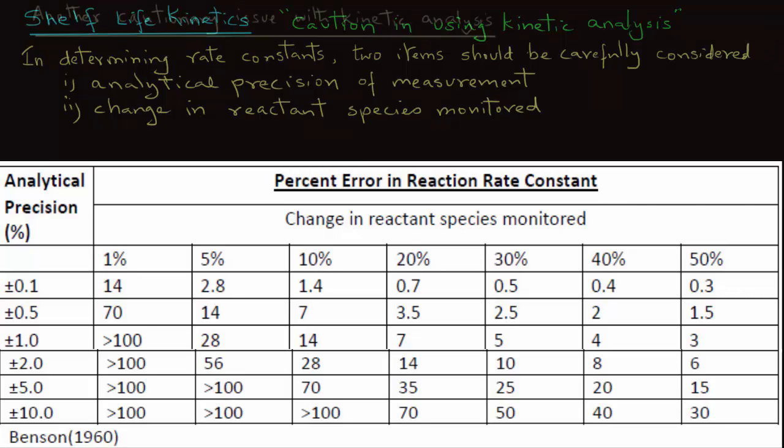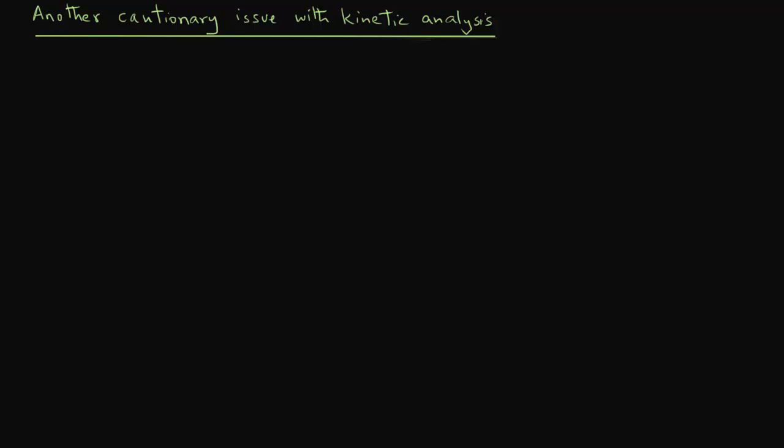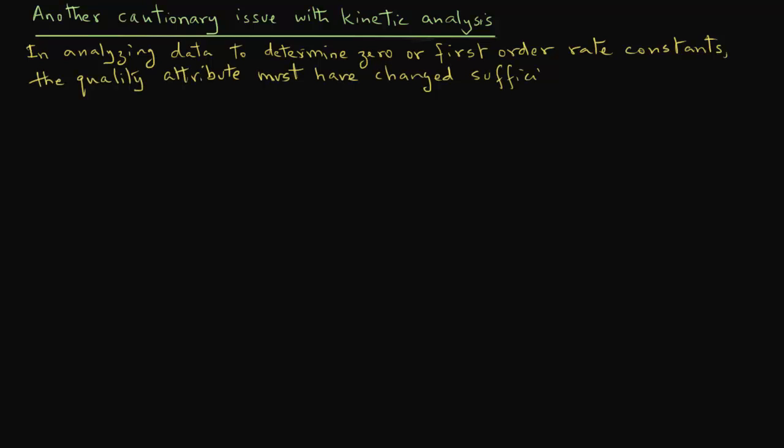Another caution in using kinetic analysis is how much of the quality attribute's change you should measure in a shelf life study. Similarly, in analyzing data to determine whether you have a zero or first order rate constant, the quality attribute must have changed sufficiently. Otherwise, the selection of the order of reaction and the subsequent predictions of the concentrations of that quality attribute will be flawed.